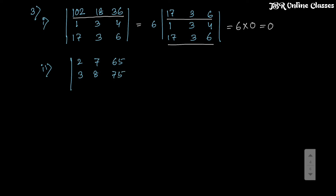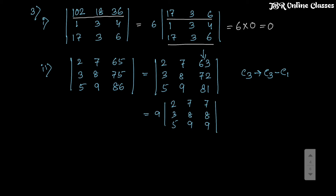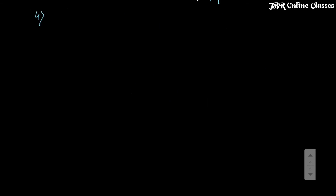Problem 32: the determinant has rows 2765, 3875, 5986 — treating each as a three-digit-style entry. Apply C3 → C3 - C1: the last column becomes 63, 72, 81. Factor 9 from the last column — it becomes 7, 8, 9. Now C2 and C3 are identically the same, so the final answer is 0.